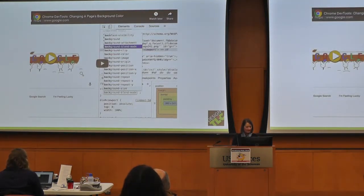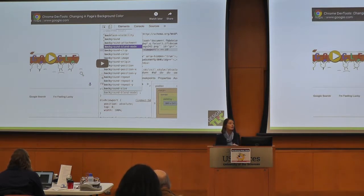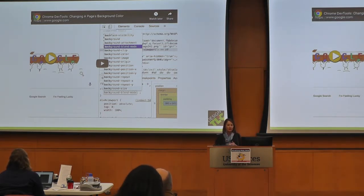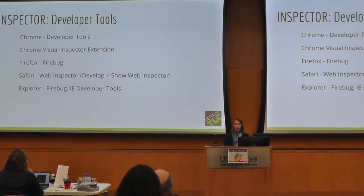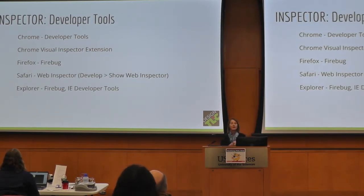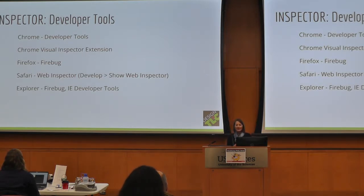So what is the inspector? It's a set of developer tools that the browser offers to us in order to inspect the code on our web pages. We can look at CSS, HTML, and we can look at the code basically behind the site. Chrome offers something they call developer tools. Firebug is what Firefox used to use — I was just told that Firebug is no longer a thing. Safari has developer tools, and Explorer does as well.